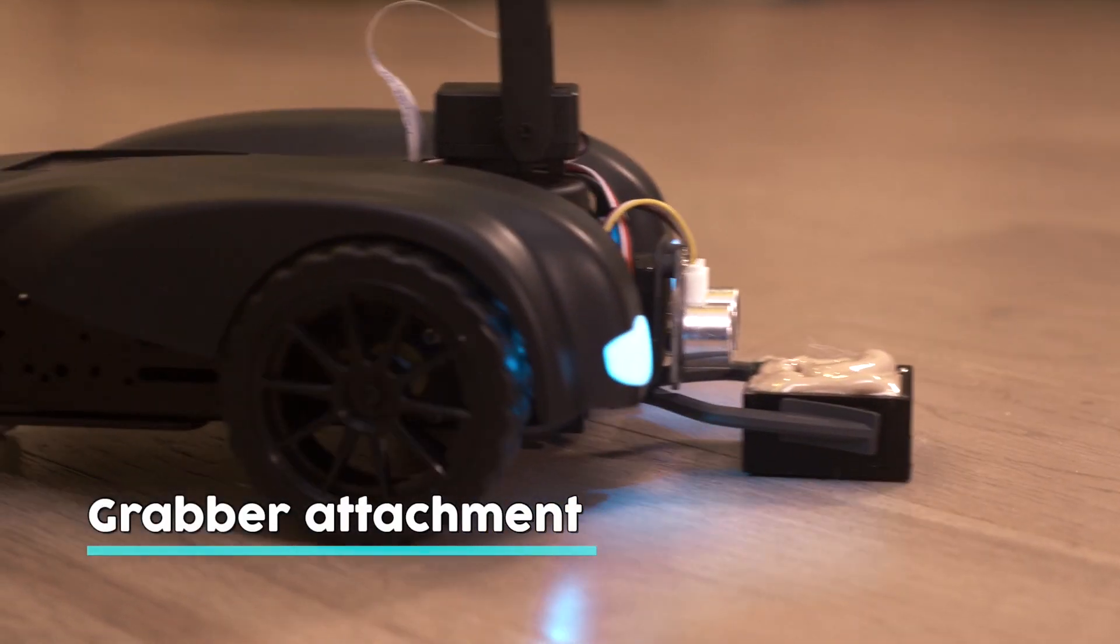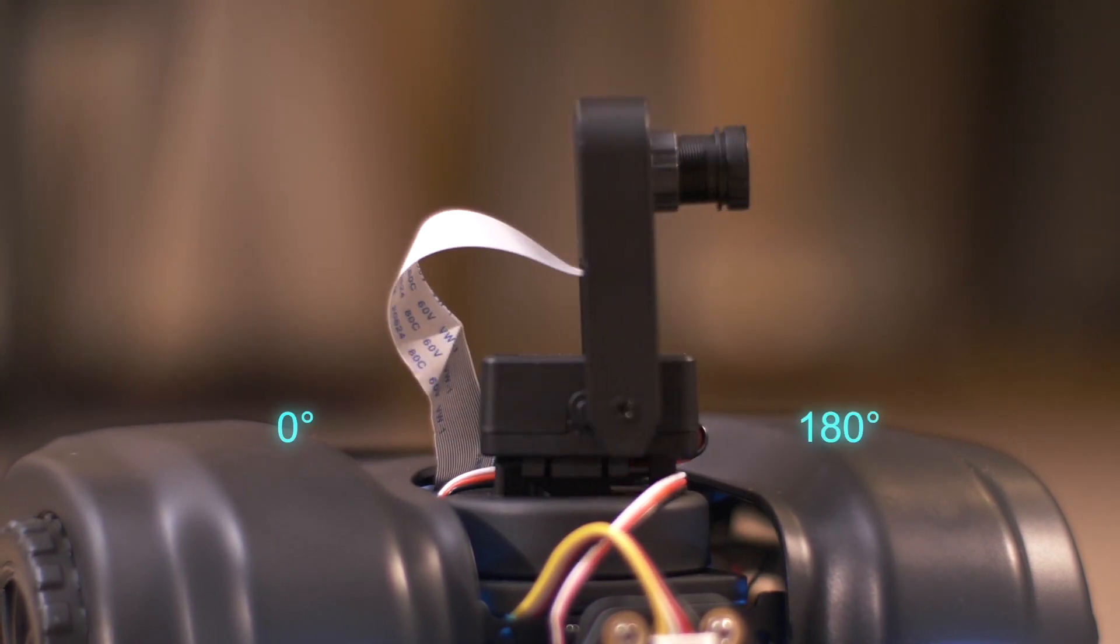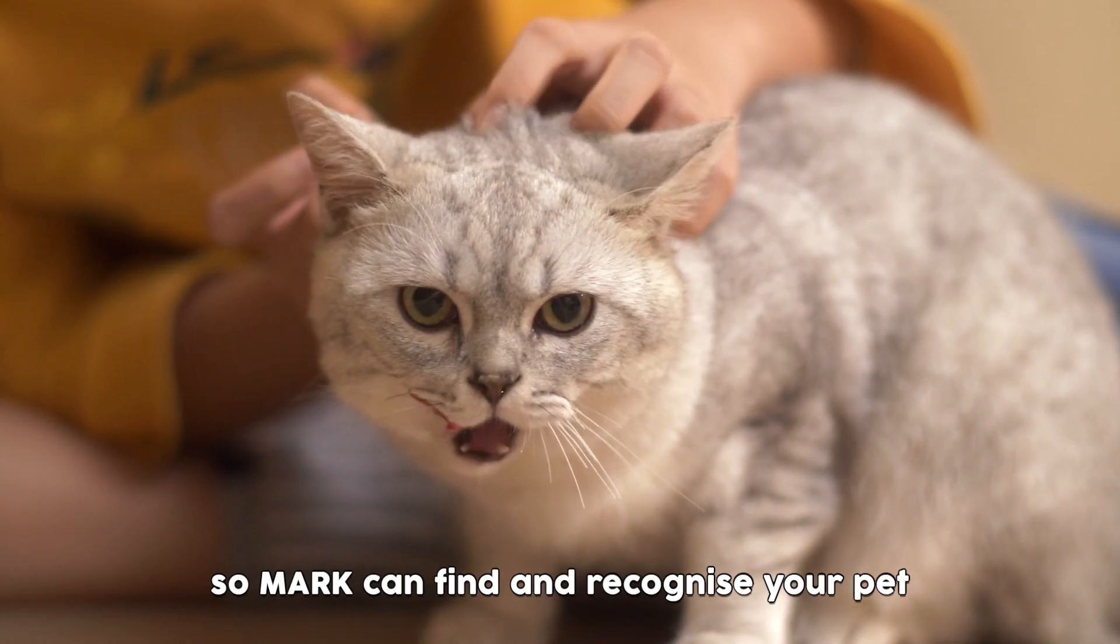You could add a grabber attachment and feed your pet a treat. Mark's pan-tilt camera has a large viewing range, and we pre-trained a model for common domestic animals so Mark can find and recognize your pet.